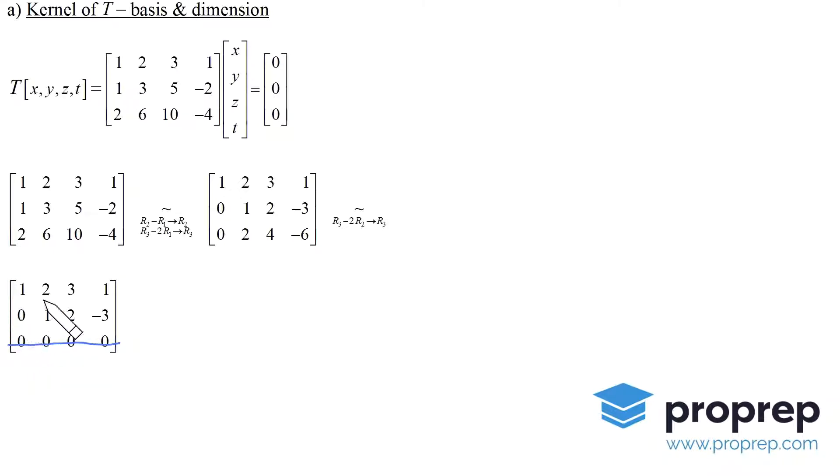At this point we go back from matrices to the system of linear equations. The pivot terms are x and y, and the remaining ones, z and t, are the free variables.